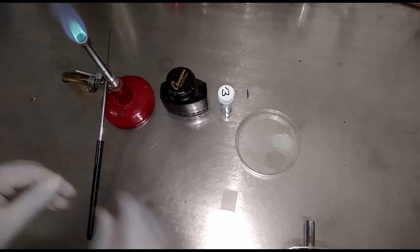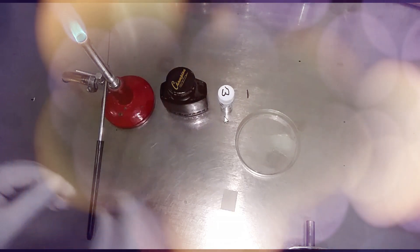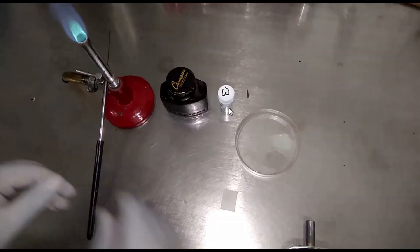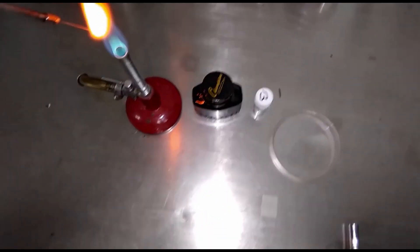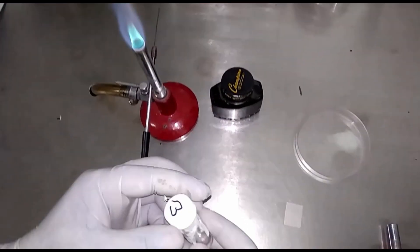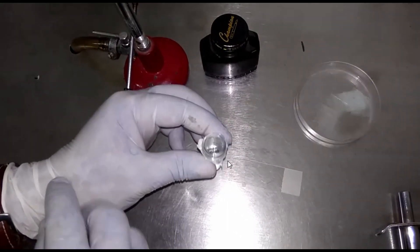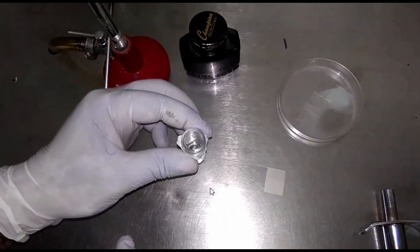This is centrifuged CSF sediment, and this is India ink. As you know, this is the Bunsen burner and this is the inoculating loop. Now for the procedure - it is performed for cryptococcus capsule identification.